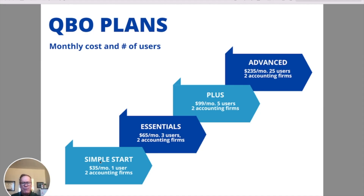This slide represents a progression from the bottom — Simple Start — all the way up to Advanced, focusing on cost and the number of users allowed. Simple Start costs $35 a month and allows one user and two accounting firms. All plans offer up to two accounting firms, meaning you can invite two accounting firms into your books. Moving up, Essentials is $65 a month for up to three users. Plus is $99 a month for up to five users and is their most popular plan. Advanced is $235 a month with a big jump to up to 25 users.